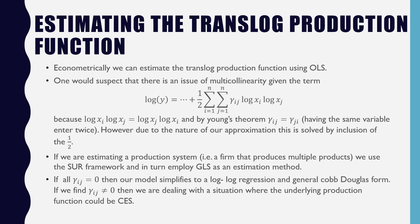If gamma ij equals zero, then our model simplifies to a log-log regression and a general Cobb-Douglas form. If we find that gamma ij is not equal to zero, then we are dealing with a situation where our underlying production function could be CES.